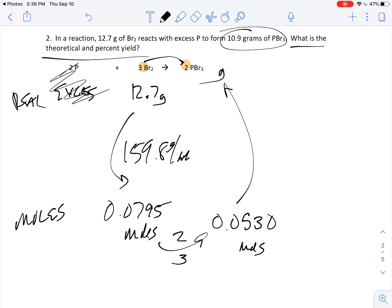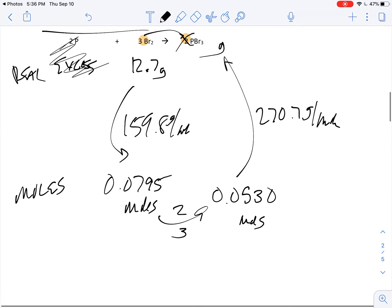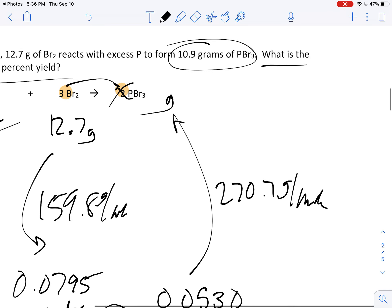I want to come back up this way to get the grams, so I'm going to use the mass there, about 270.7 grams per mole. We're not going to worry about that two because you already took that two into account. You do the math and it turns out to be about 14.3 grams that you should have gotten, or the theoretical.